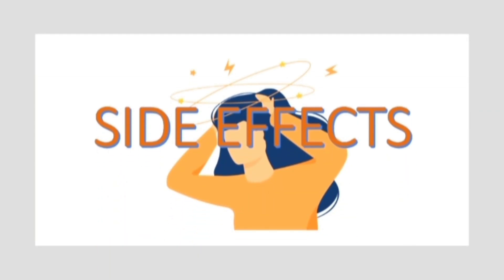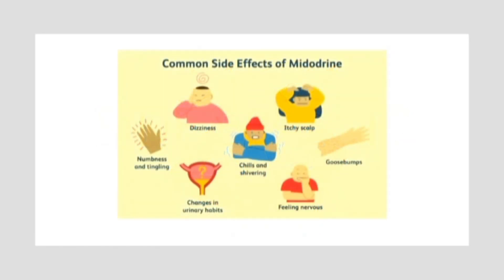Now discussing side effects. Common side effects include sudden changes in blood pressure causing reduced cerebral flow, temporarily resulting in dizziness, chills, and shivering. Desglymidodrine has affinity with alpha-1 receptors causing pilomotor action in the peripheries, resulting in numbness, tingling, goosebumps, and an itchy scalp. Additionally, sphincters in the urinary bladder remain contracted, resulting in urinary retention.